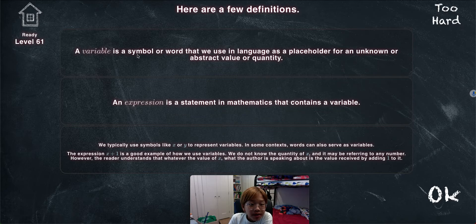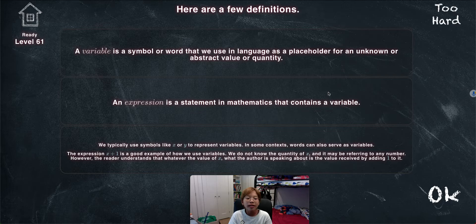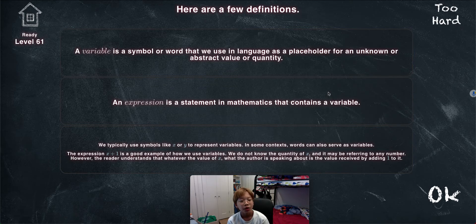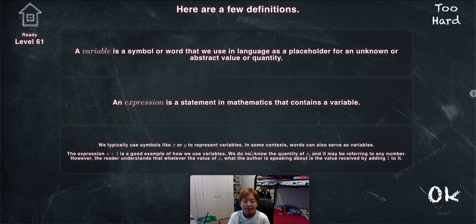A variable is a symbol or a word that we use in a language as a placeholder for an unknown or abstract value or quantity. So it's a symbol or a word — let's say 'n' — that we use to replace the number that is missing. An expression is a statement in mathematics that contains a variable, for example five times n equals 15. We typically use symbols like x or y to represent variables, though it doesn't matter. In some contexts, words can also serve as variables — for example, 'banana.'